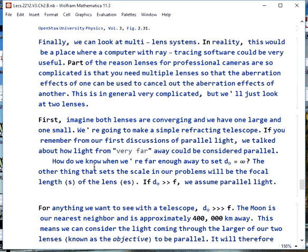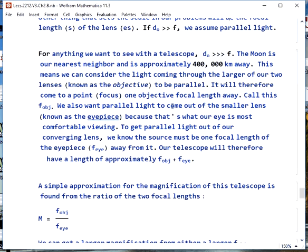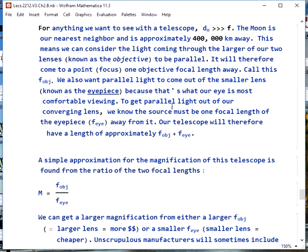We can also look at multi-lens systems. In real life, you'd want to do this with ray tracing because one of the reasons why expensive SLR camera lenses cost so much is that they're very complex. There are many lenses inside because you're trying to use the aberration caused by one lens to cancel out the aberration produced by a different lens, and this is a really complicated bit of engineering. We'll just look at two lens systems. The simplest one we imagine a telescope like Galileo had, where we have two converging lenses, one large and one small. This will give us a refracting telescope. If you remember when we first talked about parallel light, we wanted to know how far away is far enough to give us parallel light. What really sets the scale is the focal length of our lenses. If our object distance is very far compared to the focal length, we can say it's essentially infinite and the light is parallel. Anything we look at with the telescope will satisfy this. The moon is the closest thing we can see, and it's 400,000 kilometers away, and that's ridiculously larger than the focal length of any of our telescopes.